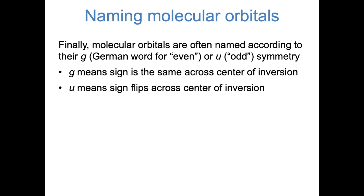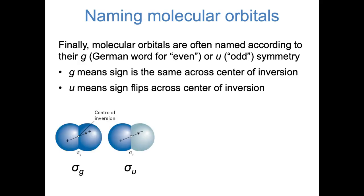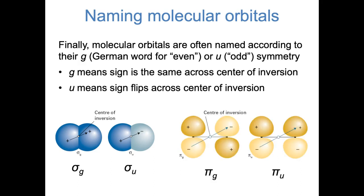It's probably easier to see this in pictures. Sigma g is the orbital that's an even function, where the sign is the same if you look at two points across the center of inversion. And sigma u is the odd function, where the signs are different. I want to emphasize that g does not necessarily mean bonding, and u does not necessarily mean antibonding. These pi orbitals are a counterexample: pi g is actually the antibonding orbital, because the sign stays the same when you go across the center of inversion. And pi u, the odd function, is actually the bonding orbital. You'll often see combinations of all of these different notations — the symmetry, the bonding and antibonding character, and the even or odd parity.